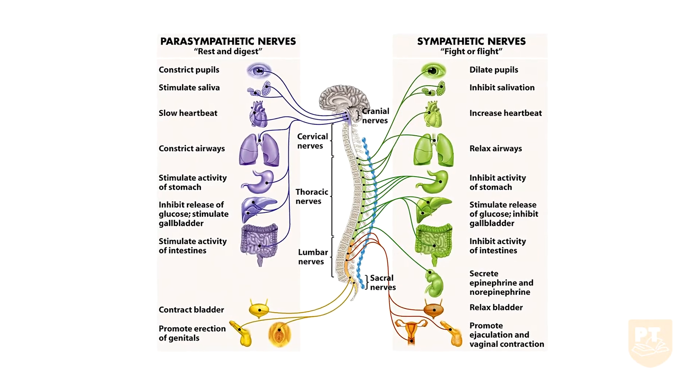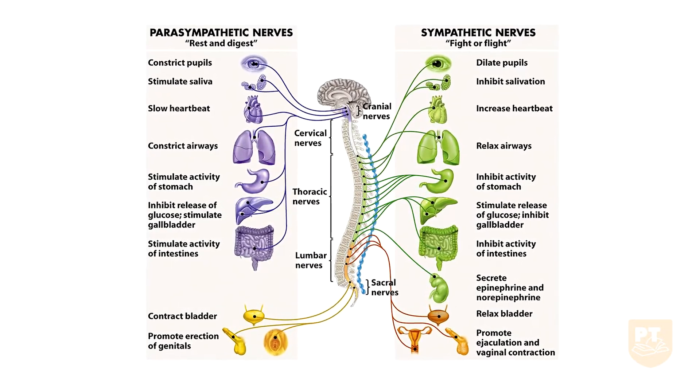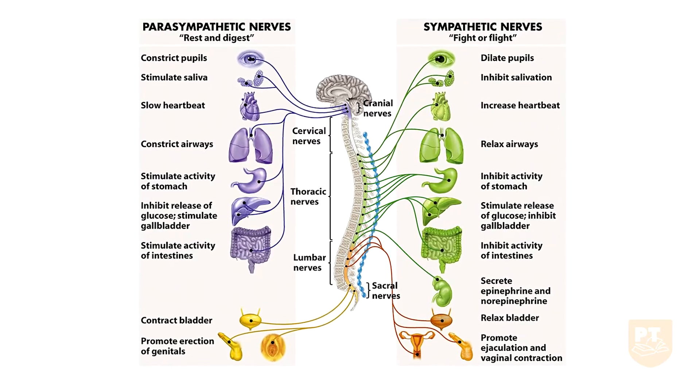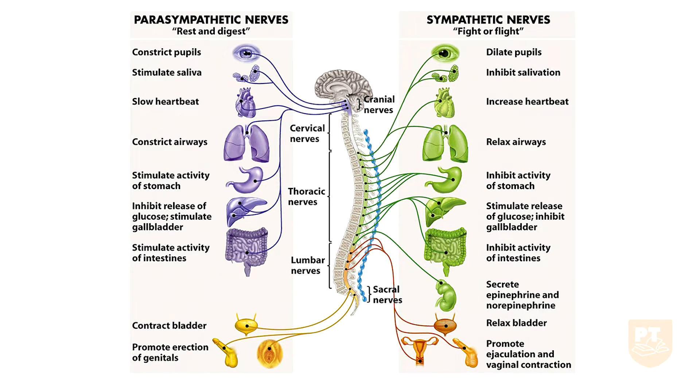In order to fully understand autonomic dysreflexia, you must understand the autonomic nervous system and how it is affected from a high spinal cord lesion. The two systems that make up the autonomic nervous system are the parasympathetic and sympathetic nervous systems. Their actions, as well as where their fibers arise from within the spinal cord, are critical to understanding autonomic dysreflexia.